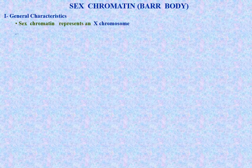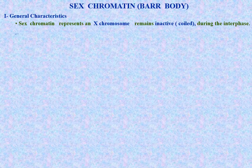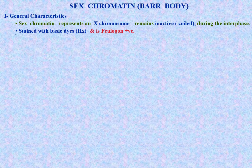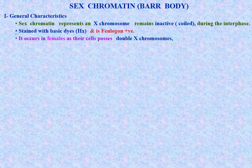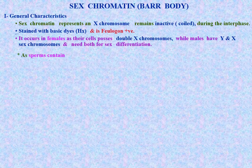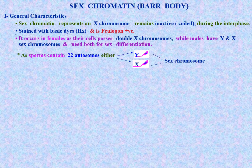Sex chromatin (Barr body) - general characteristics: the sex chromatin represents an X chromosome which remains inactive and coiled during the entire interphase. It is stained with basic dyes such as hematoxylin and is Feulgen-positive. It occurs in females because their cells possess double X chromosomes, while males have XY and need both for sex differentiation.